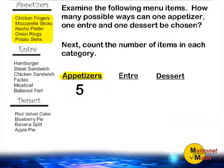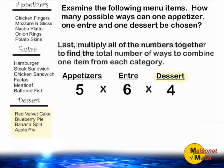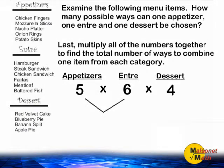There are five appetizers, six entrees, and four desserts to choose from. After you have identified how many different choices you have from each category, simply multiply those choices together.